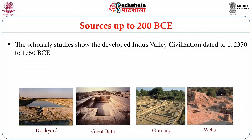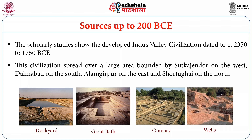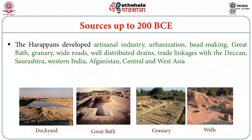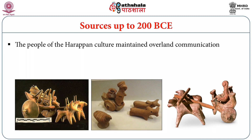Scholarly studies show the developed Indus Valley Civilization dated to about 2350–1750 BCE. This civilization spread over a large area bounded by Sutkagendor on the west, Daimabad on the south, Alamgirpur on the east, and Shortugai on the north. The people developed artisanal industry, urbanization, bead making, the great bath, granary, wide roads, well-distributed drains, and trade linkages with the Deccan, Saurashtra, Western India, Afghanistan, and Central and West Asia. The people of the Harappan culture maintained overland communication and used wheeled carts.